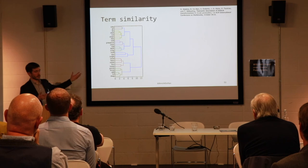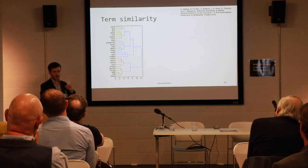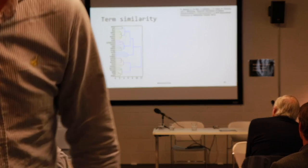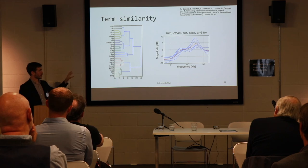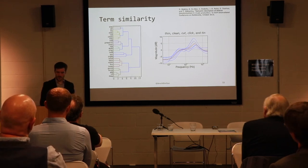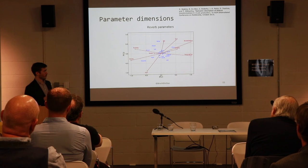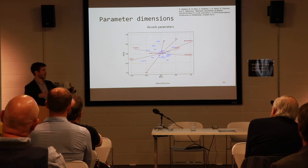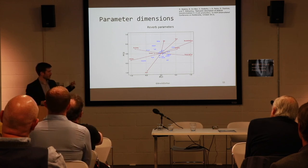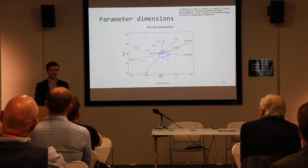This graph is called a dendrogram — essentially a tree — grouping those terms which are most closely related in terms of measurable signal properties. For instance, the words thin, clean, cut, click, and tin are actually quite similar to one another in terms of spectral contour. You can also look at specific effect parameters: for a reverberator, turning up the density knob evokes the feeling of — in that order — big, huge, and massive. So maybe it's quite a semantic control after all.